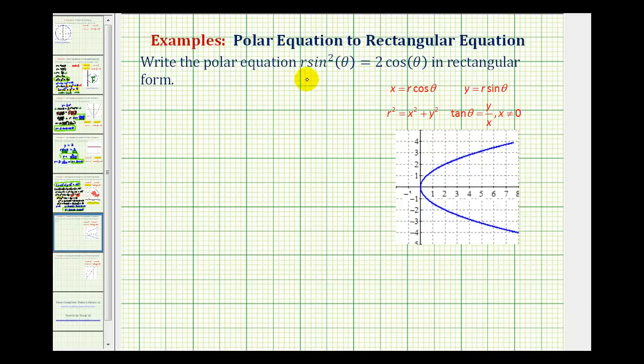We want to write the equation r sine squared theta equals two cosine theta in rectangular form. To do this, we'll use the equations here that relate polar and rectangular coordinates.